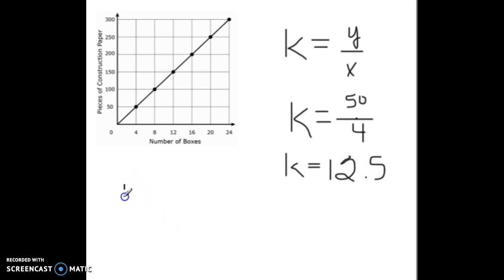So when it equals 12.5, that means we have 12.5, and according to this, pieces of construction paper. So 12.5 pieces over every one box. Those must be pretty little boxes if they only can hold 12.5 pieces of paper. And most likely, there's not 12.5 pieces in one box. Why would you just put half a piece of paper in a box? I don't know. These are math problems.